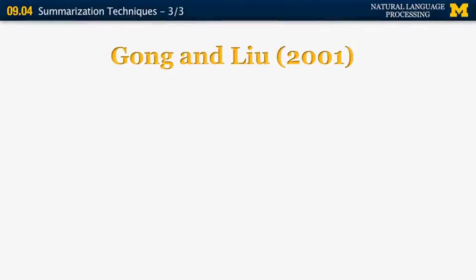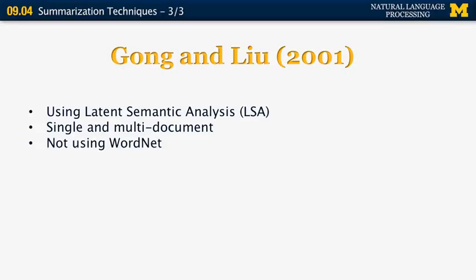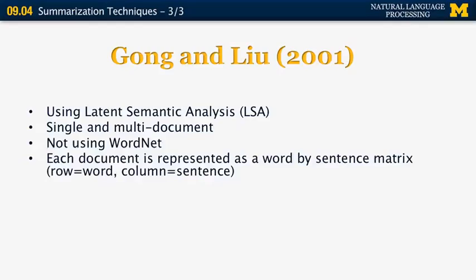So the next paper that I want to mention very briefly is by Gong and Liu, 2001. This is the first paper that uses Latent Semantic Analysis, LSA, something which we have talked about in the past in this class. It works on both single and multi-document summarization cases and doesn't use any explicit semantics in linguistics, for example, WordNet. So each document is represented as a word-by-sentence matrix, where each row corresponds to a word and each column corresponds to a sentence. The weights in the matrix are based on the TF-IDF values of the words.